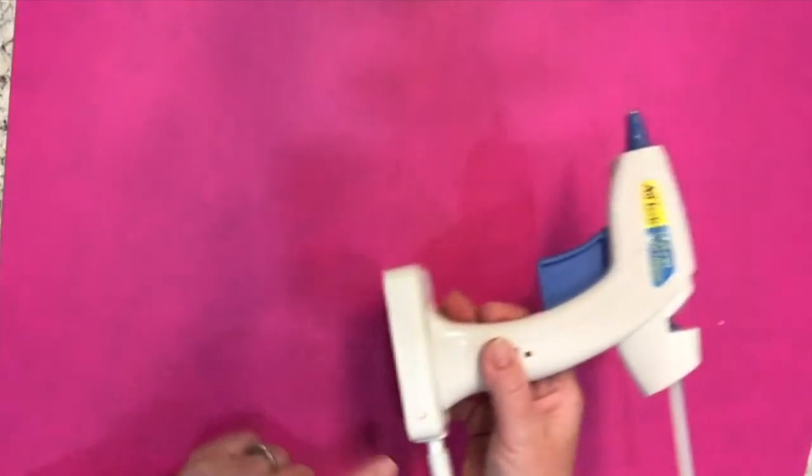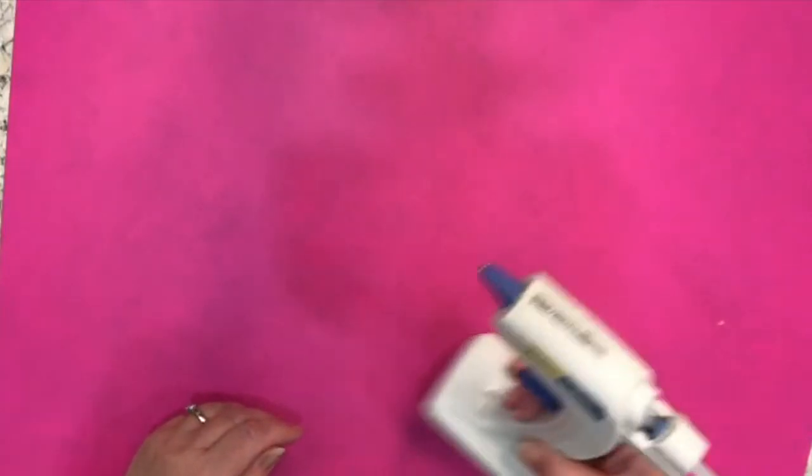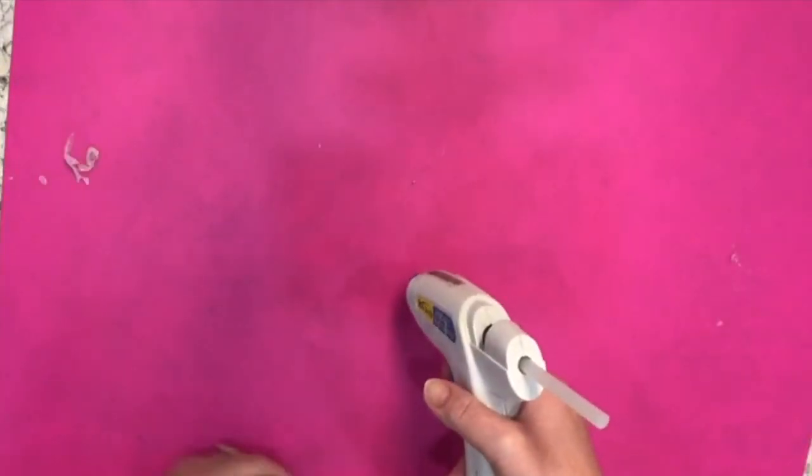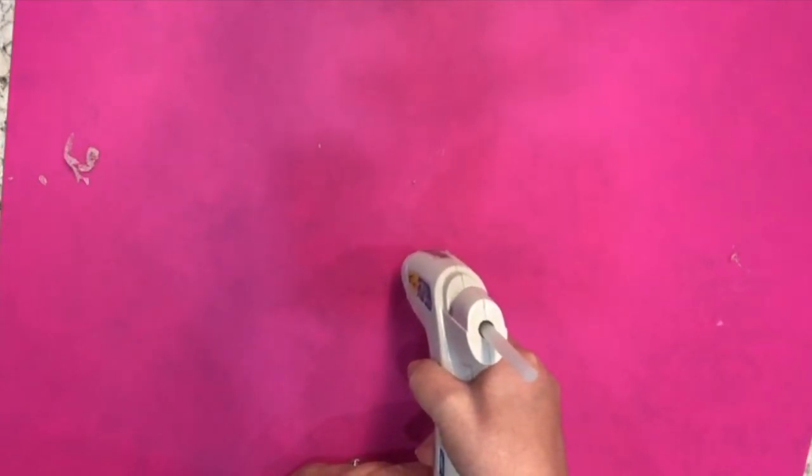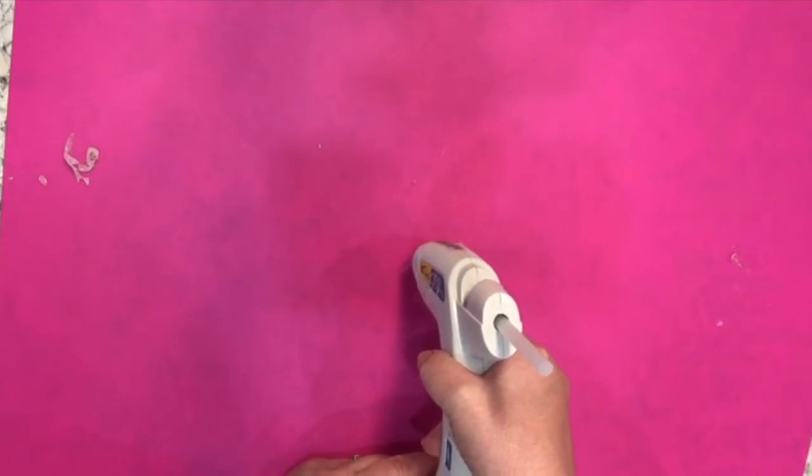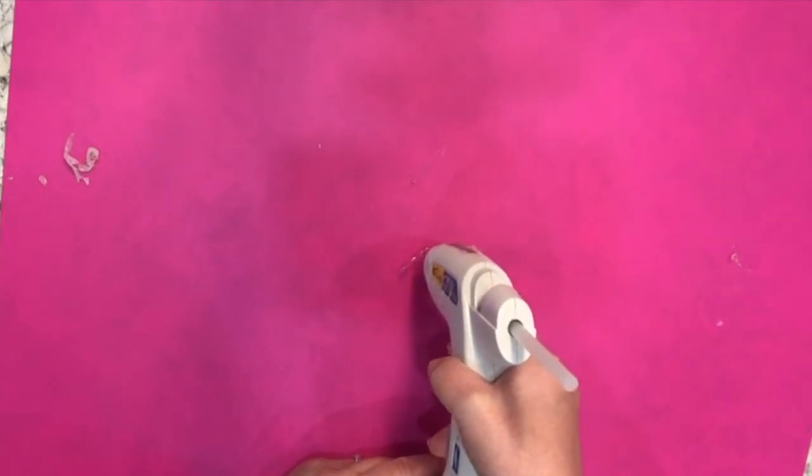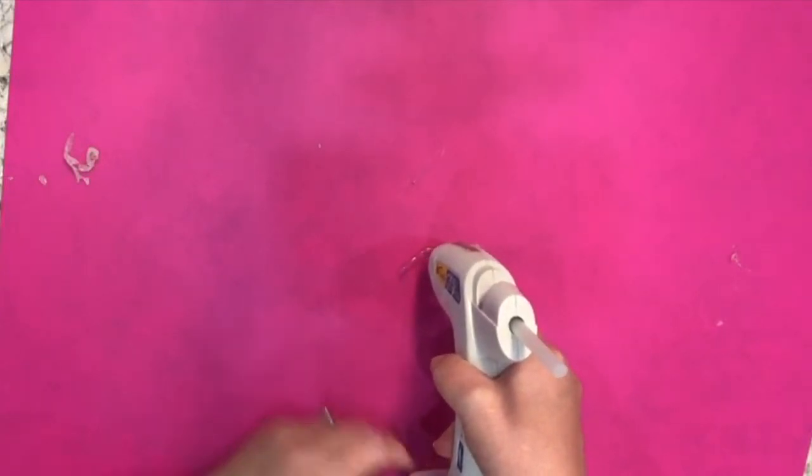In order to make stencils similar to the ones I just showed you, all you need is a hot glue gun that is nice and hot and some glue sticks. Here I am just free handing a heart shape.